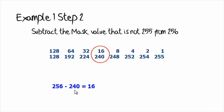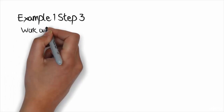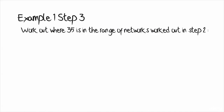Step two: subtract that subnet mask value from 256. So 256 minus 240 gives 16. This tells us that networks increment in values of 16 — the first network is 0, second is 16, third is 32, fourth is 48, and so on. The table from step one lets you work this out quickly. In the third octet, the subnet mask is 240, and 256 minus 240 gives 16. The third octet of the IP address is 35, so part of 35 is network and part is host. Step three works out where 35 fits in the network ranges.